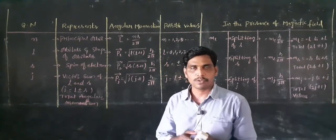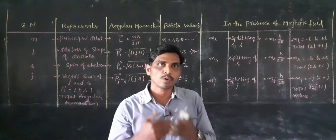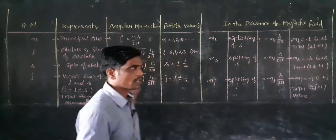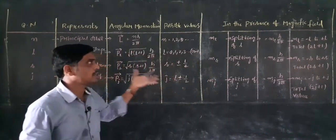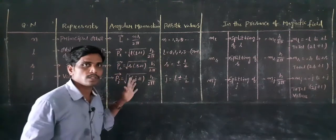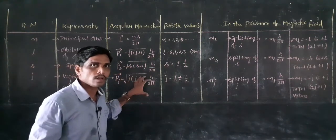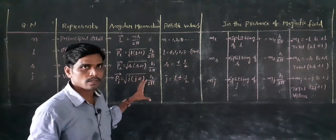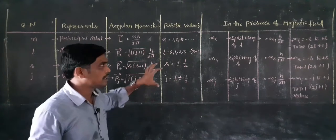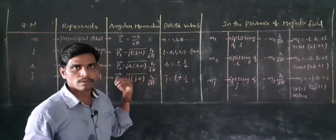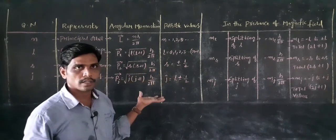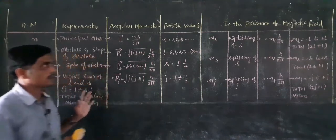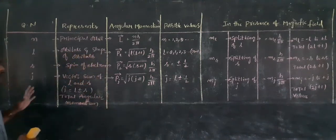We discussed 7 quantum numbers. This is the last class for quantum numbers — quantum numbers are mentioned in the last class. So in that class we have to follow up. We have discussed about 7 quantum numbers.